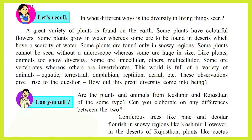In what different ways is the diversity in living things seen? A great variety of plants is found on the earth. Some plants have colorful flowers, some grow in water, whereas some are found in deserts which have a scarcity of water. Some plants are found only in snowy regions, and some plants cannot be seen without a microscope.